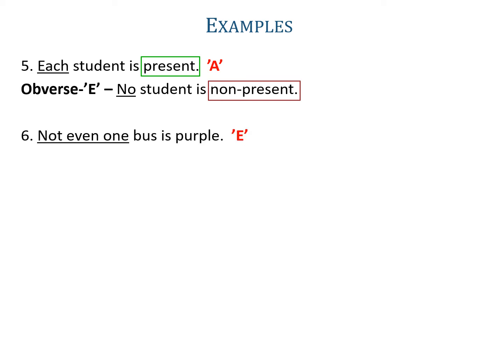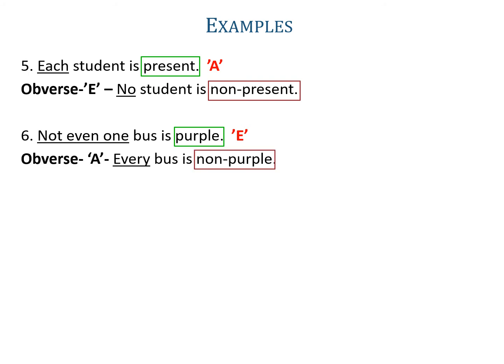Example six: 'Not even one bus is purple.' Not even one is given in the proposition, so it is an E-proposition. Its obverse will be A, and the predicate of the given proposition is purple, its complementary is non-purple. When transforming it into an A-proposition, you must write it in a singular term only, because the given E-proposition is in singular term. So the obverse will be 'every bus is non-purple'.